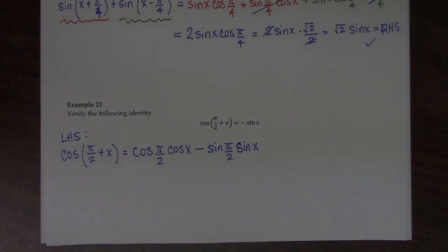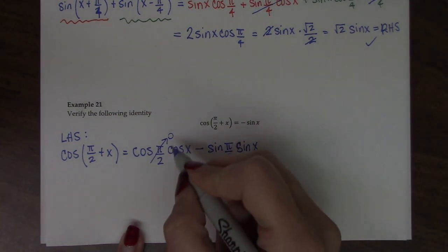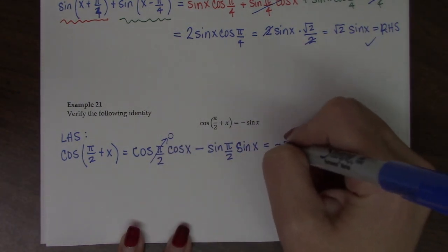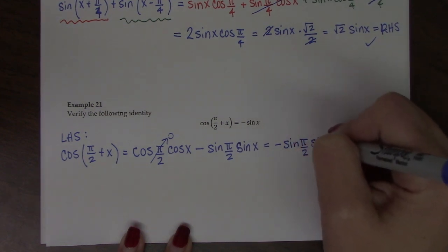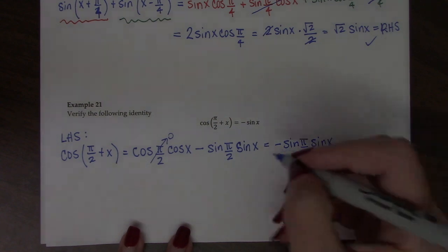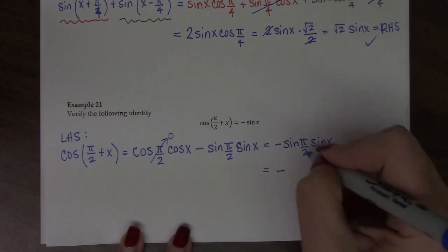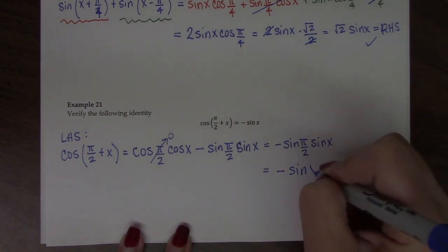So cosine of pi over 2 is 0, so this whole term goes to 0. And I'm just left with this. Sine of pi over 2 is 1, so it's negative 1 times sine of x.